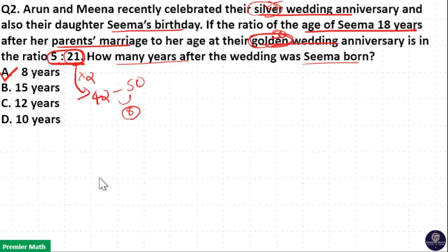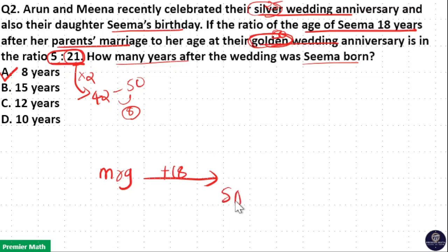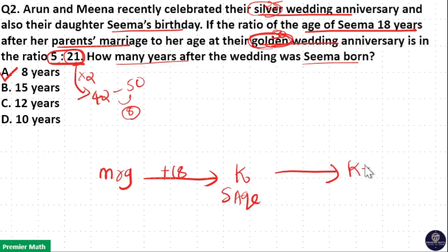Consider the marriage happened on a particular year. Then, after 18 years, consider Sima's age as K. Then, after the 50th year — that is, at the golden wedding anniversary — her age will become K plus 32, because 18 plus 32 is 50. So Sima's age at the golden wedding anniversary will be K plus 32.